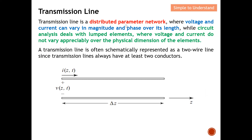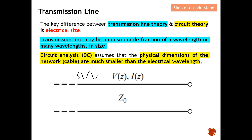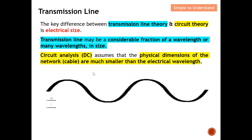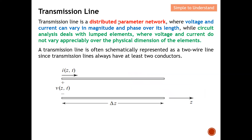A transmission line is a distributed parameter network. Because the wavelength is short, there is a fluctuation between maximum and minimum values along the line. This means voltage and current actually vary in magnitude and phase over the length of the transmission line. At any point along the transmission line, the voltage and current can be very different either in magnitude or in phase.